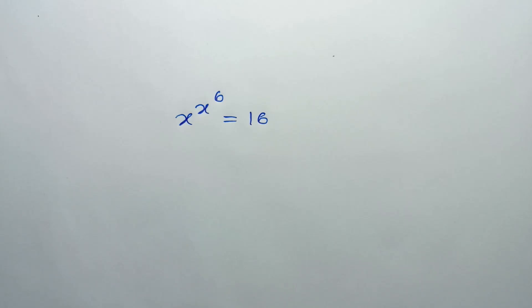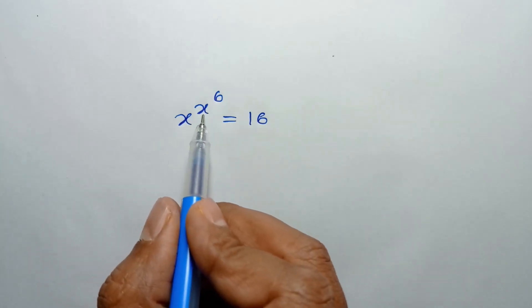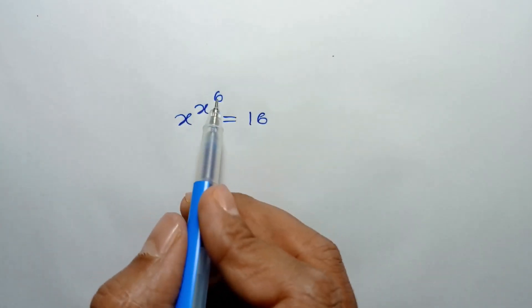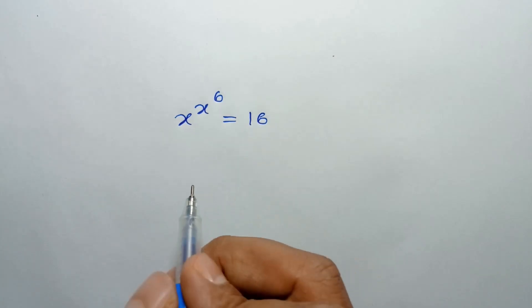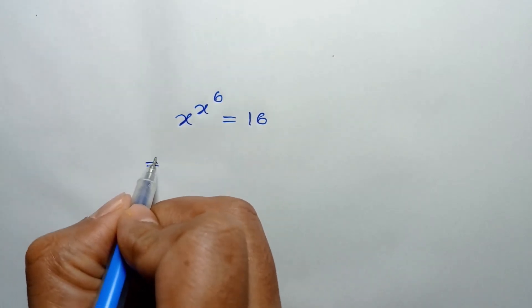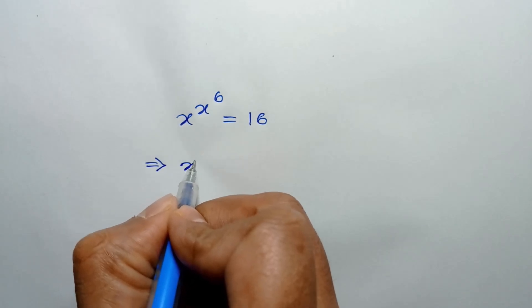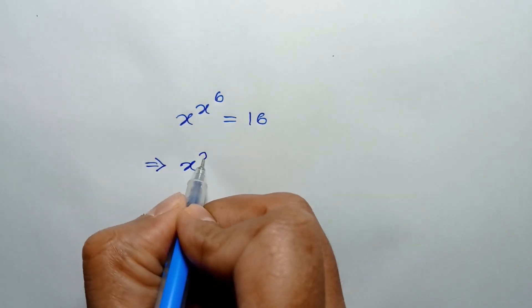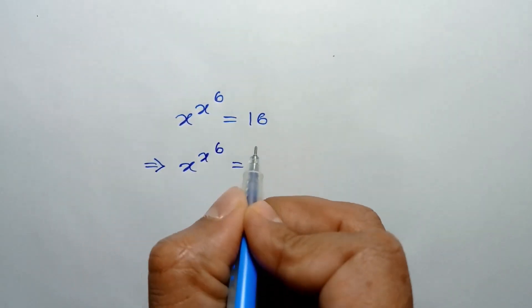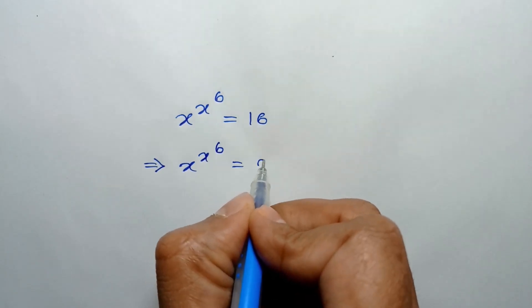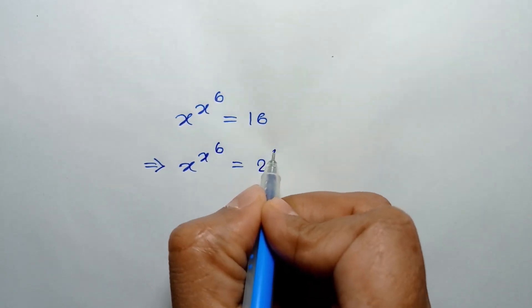Hi everyone. In this video, I am going to show how to solve x to the power x to the power 6 is equal to 16. x to the power x to the power 6 is equal to 16 can be written as 2 to the power 4.